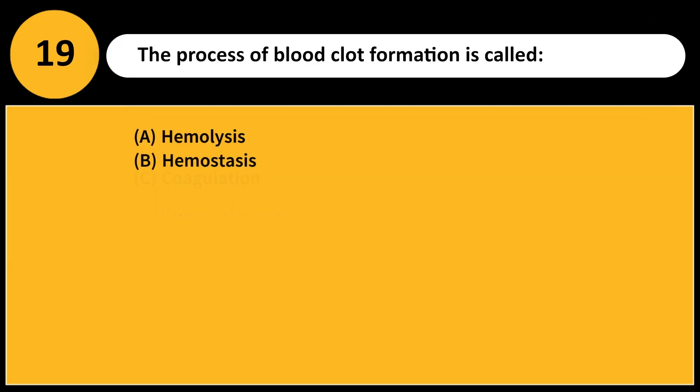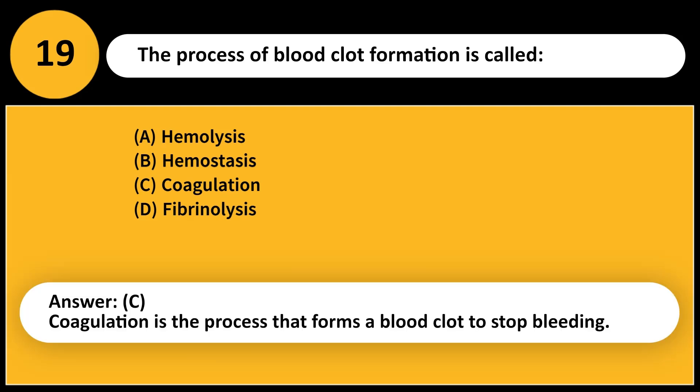The process of blood clot formation is called: A. Hemolysis. B. Hemostasis. C. Coagulation. D. Fibrinolysis. Answer: C. Coagulation is the process that forms a blood clot to stop bleeding.